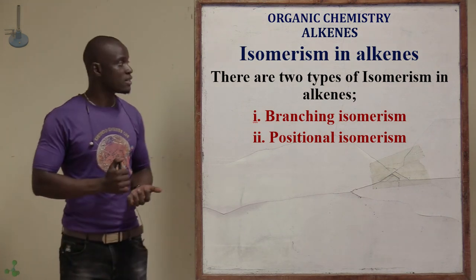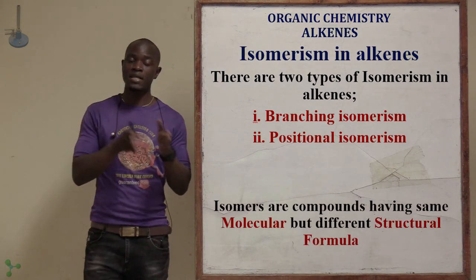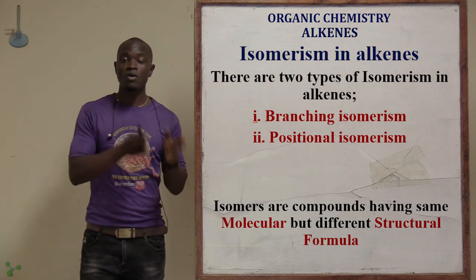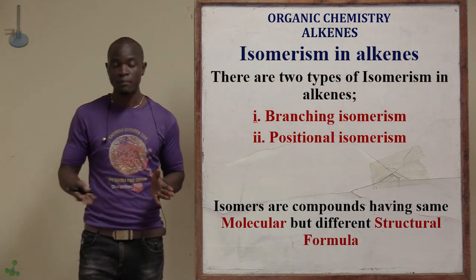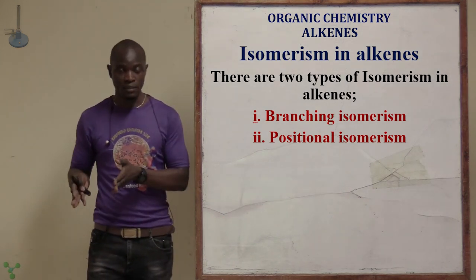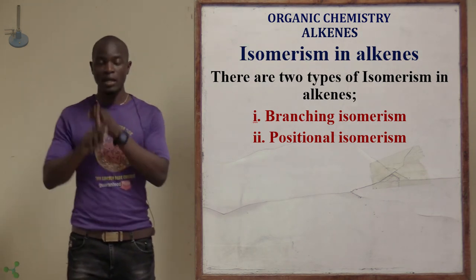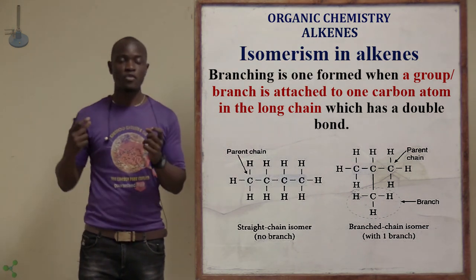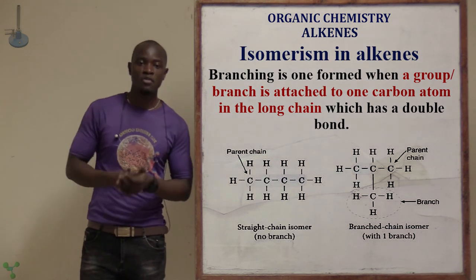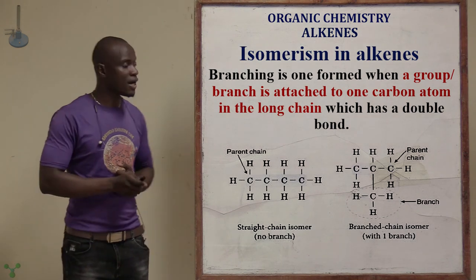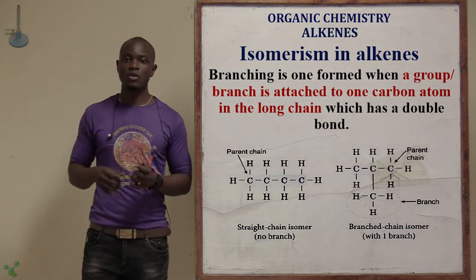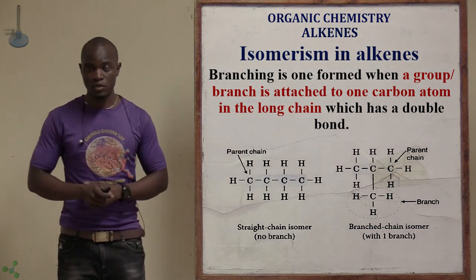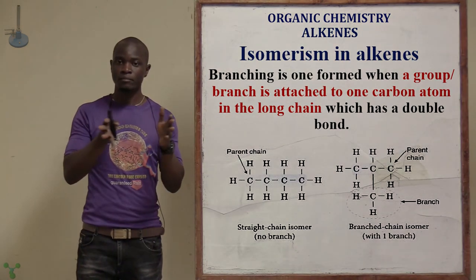Now let's look at isomerism in alkenes more carefully. There are two types: branching isomerism and positional isomerism. Branching isomerism involves removing a functional group or substituent from one position of the structure and placing it in another position, occurring when a substituent group is attached to one of the carbon atoms in the longest carbon chain.